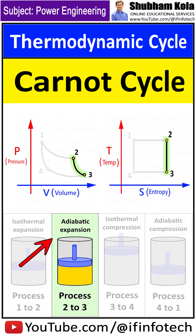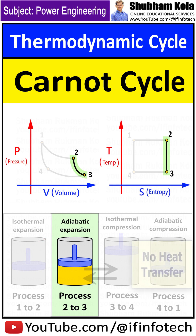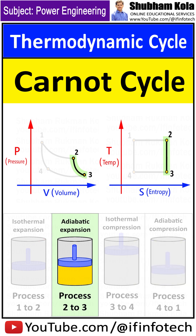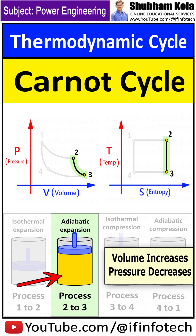The next process, 2 to 3, is the reversible adiabatic expansion process. Adiabatic means there is no heat transfer between the surrounding and the system, because the system is thermally insulated. During this process, gas continues to expand, due to which the volume of gas increases and pressure decreases, and work is done on the surrounding.